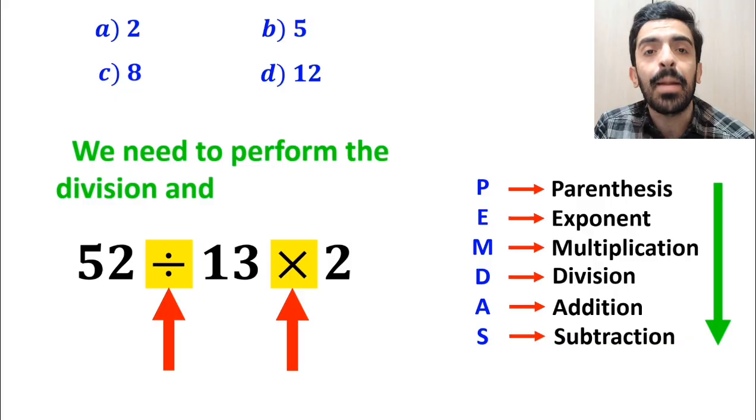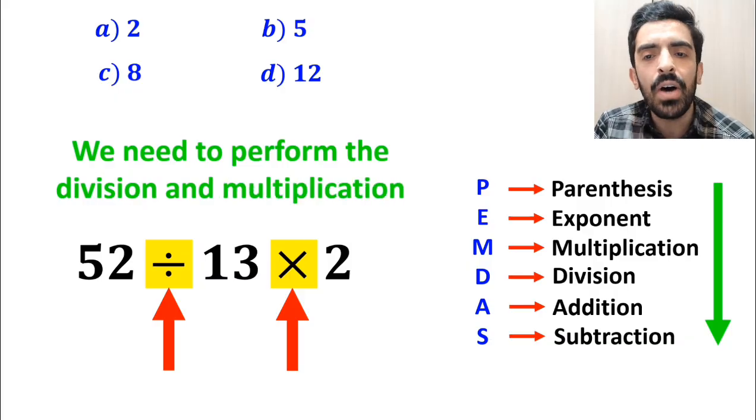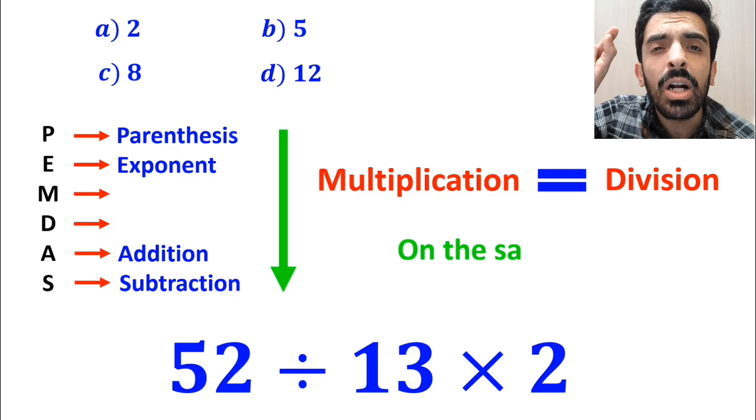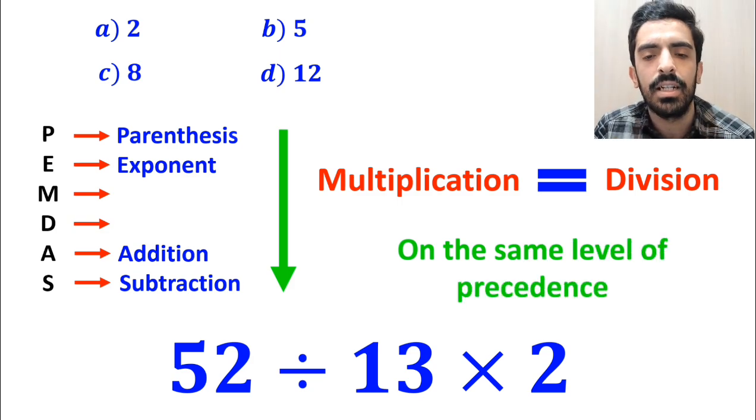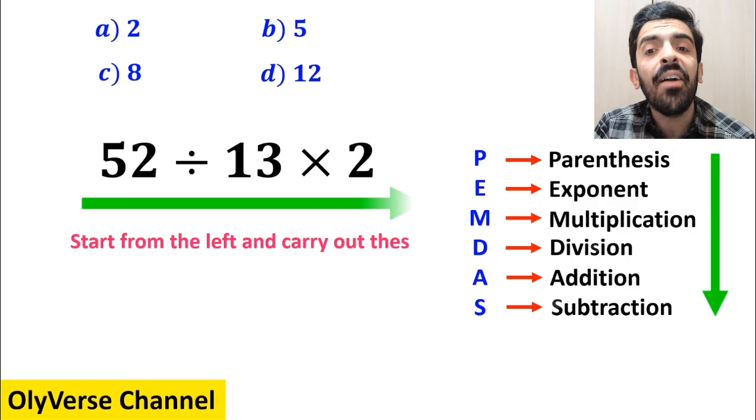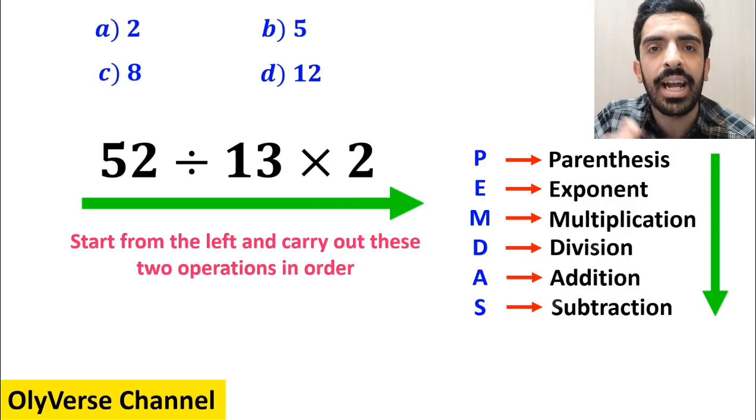Now, we need to perform the division and multiplication. However, it's very important to keep in mind that multiplication and division are on the same level of precedence. In this case, the best approach is to start from the left and carry out these two operations in order.